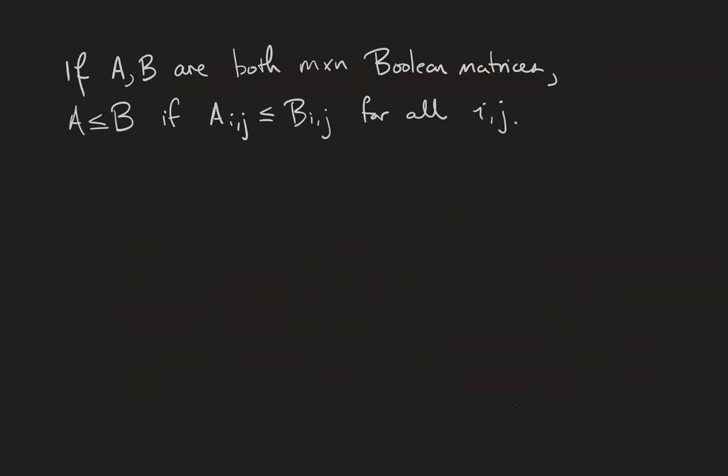Finally, if A and B are both m by n Boolean matrices, we can say that A is less than or equal to B if the entry aij is always less than or equal to the entry bij, thinking of these as numbers.